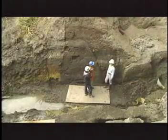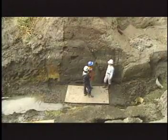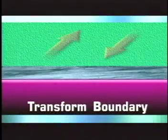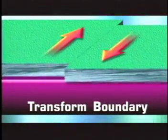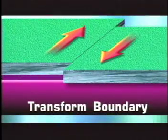Wow, now I'm starting to understand why the Earth is shaped the way it is. The last boundary is called the transform boundary. It's when plates slide past each other, like the San Andreas Fault here.